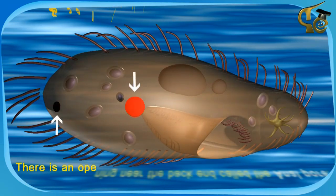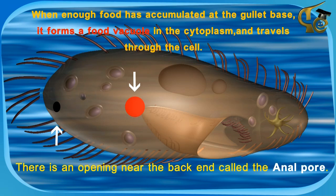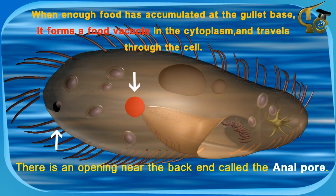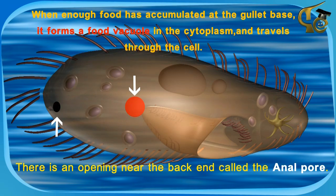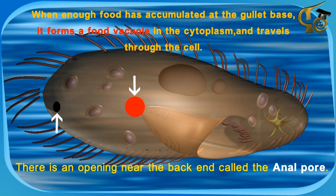When enough food has accumulated at the gullet base, it forms a food vacuole in the cytoplasm and travels through the cell. There is an opening near the back end called the anal pore.